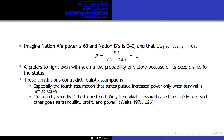For example, if the utility of nation B is greater than the utility of the status quo at 0.1, then P equals A over (A plus B), which is 60 divided by 300, equals 0.2. Nation A prefers to fight even with such a low probability of victory because of its deep dislike for the status quo. These conclusions contradict neorealism's assumptions, especially the fourth assumption that states pursue increased power only when survival is at stake.